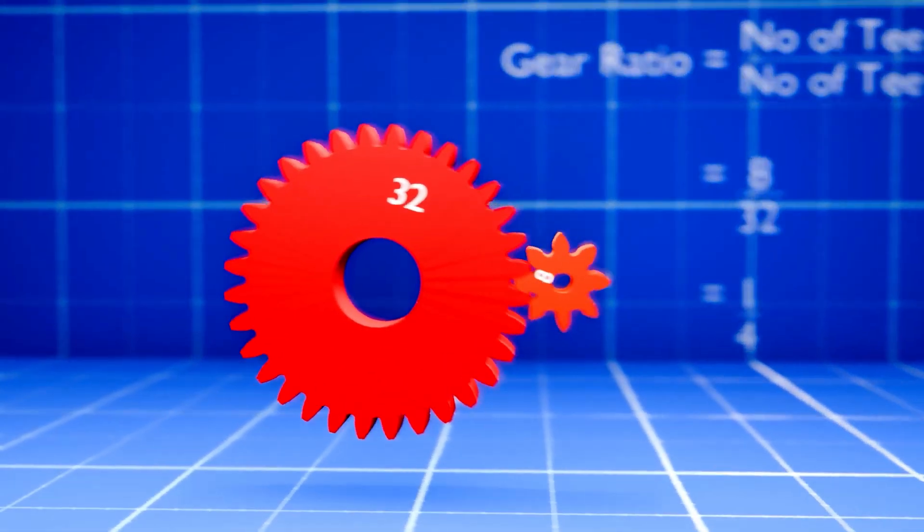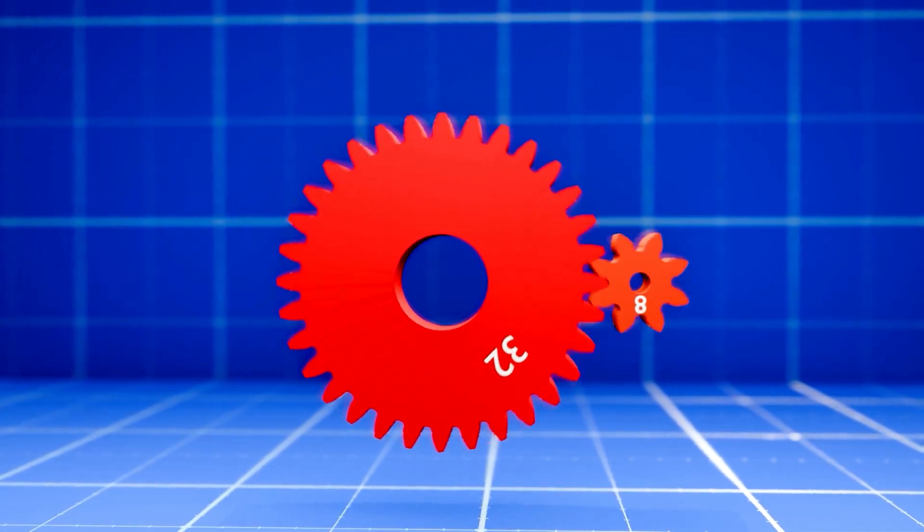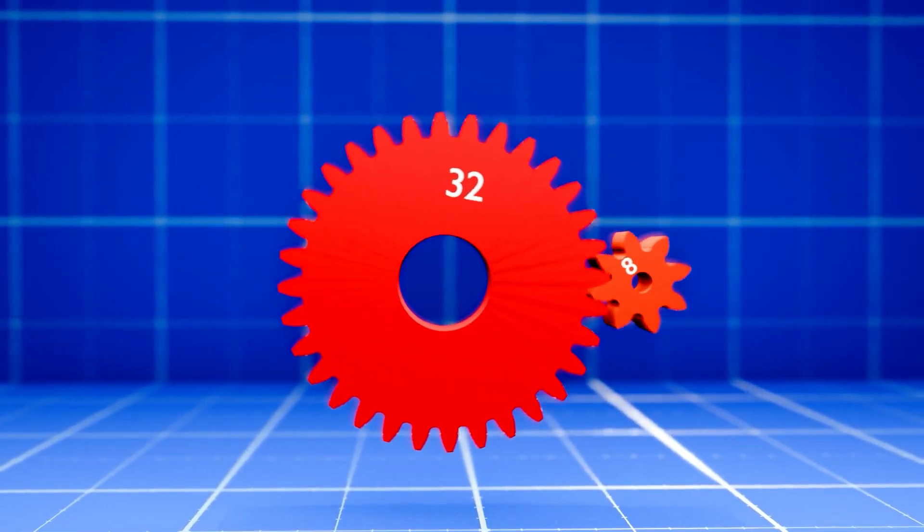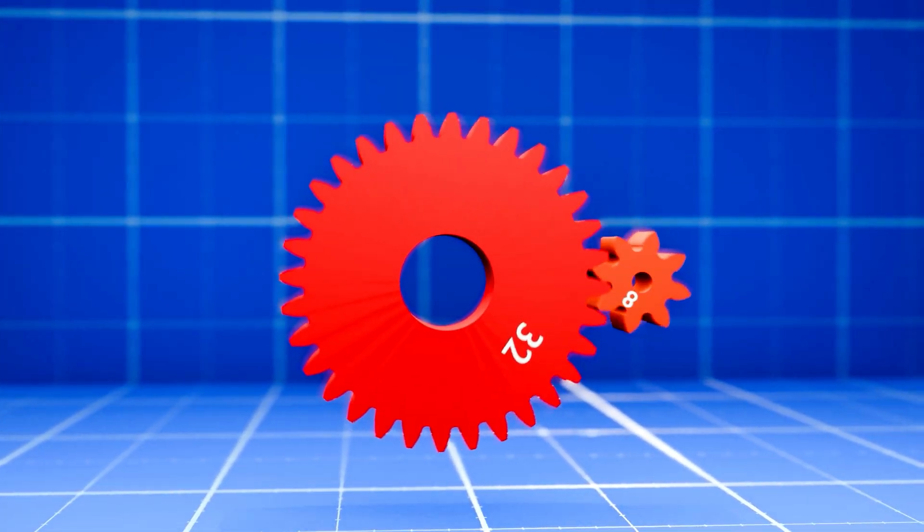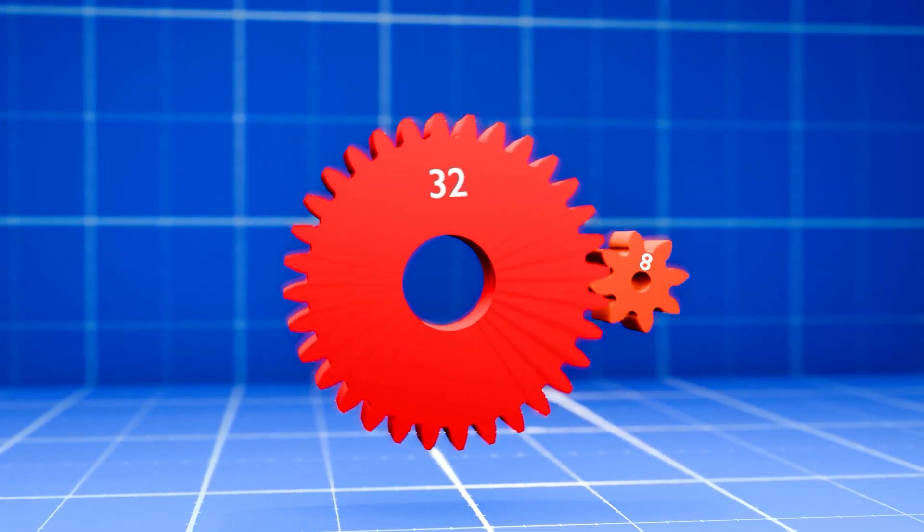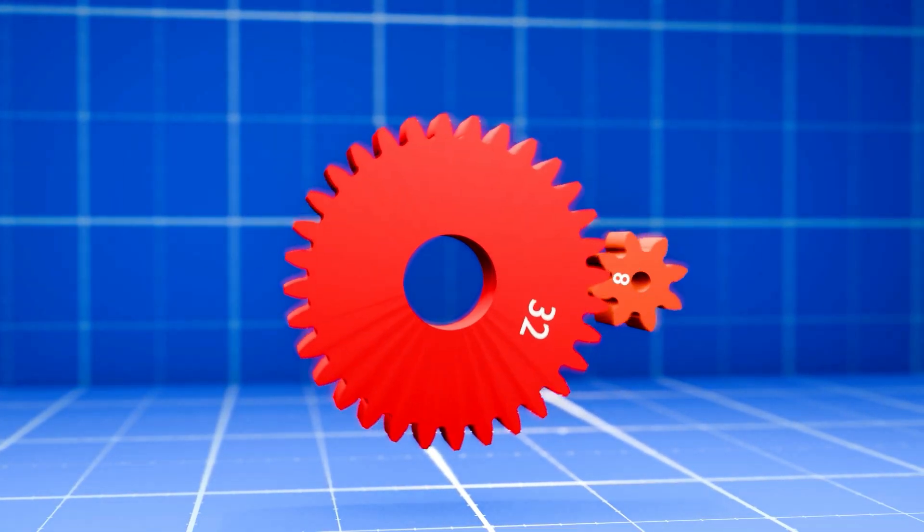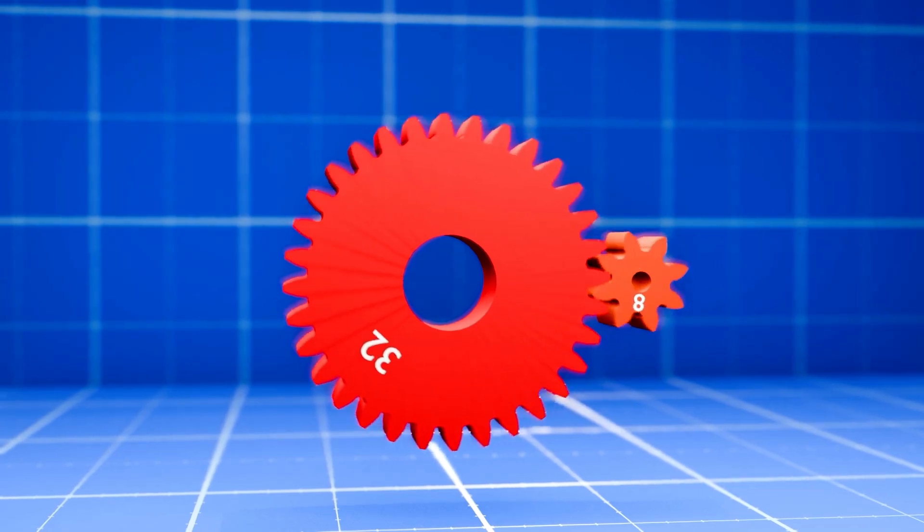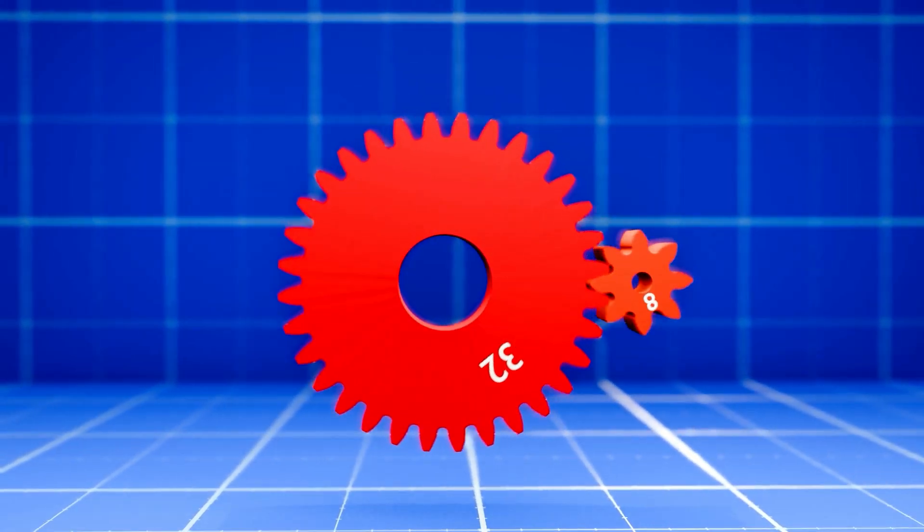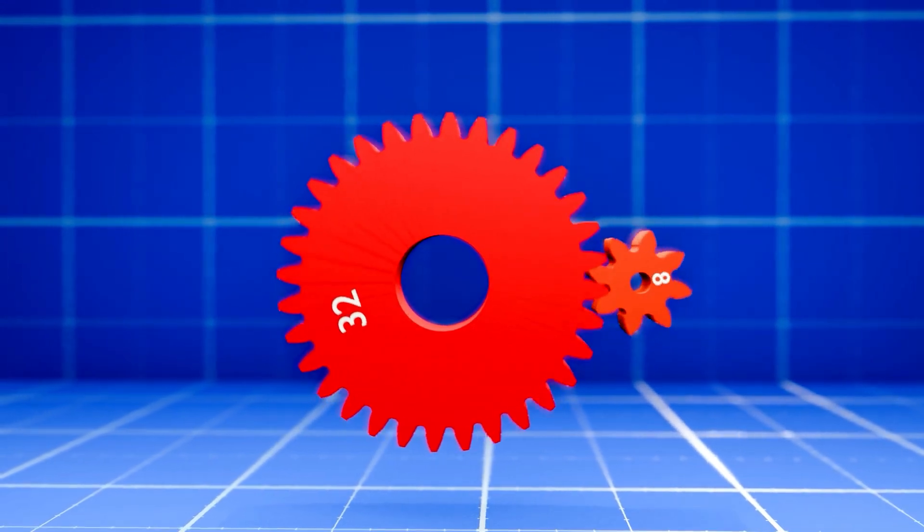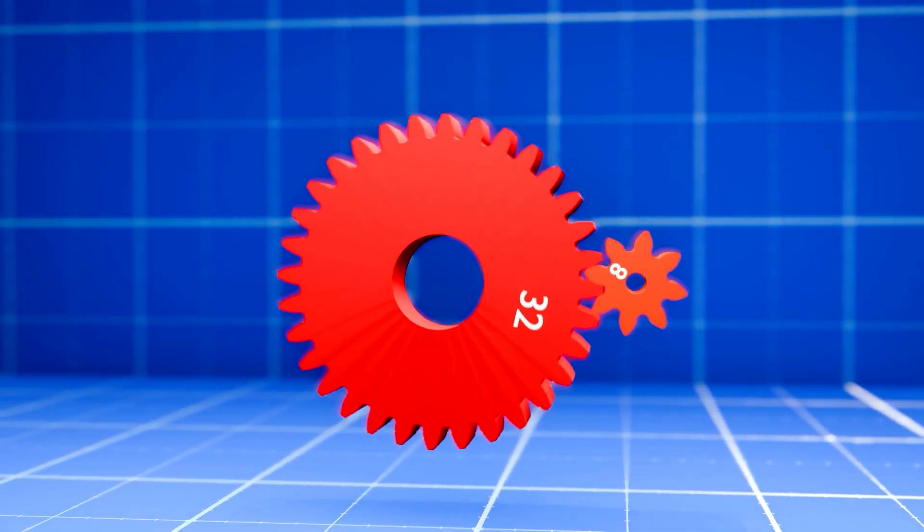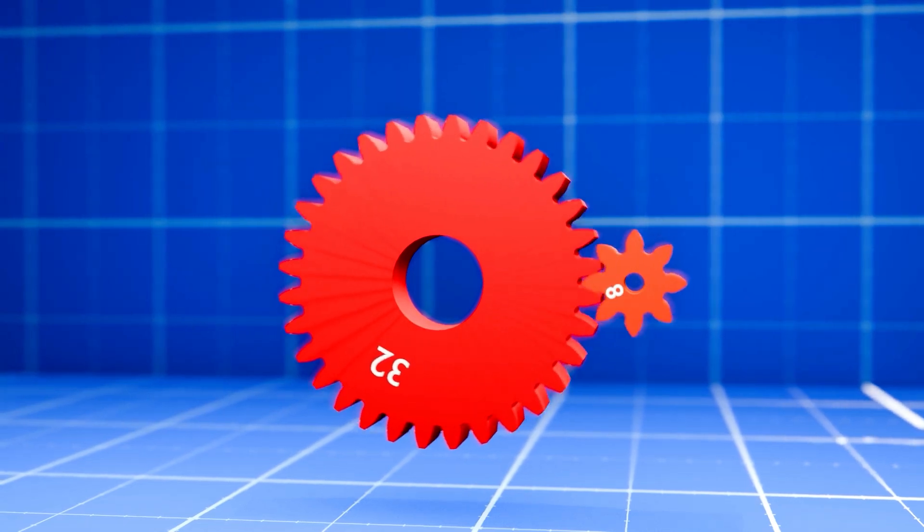But there's a trade-off. While speed goes up, force goes down. You sacrifice power for speed. Although the small gear will spin 4 times faster than the large gear, it would not have much force. Think about a car in 5th gear. It runs really fast, but you cannot start a car in 5th gear because it doesn't have much force. You have to start a car in 1st gear, which can provide a lot of force but cannot achieve a higher speed.